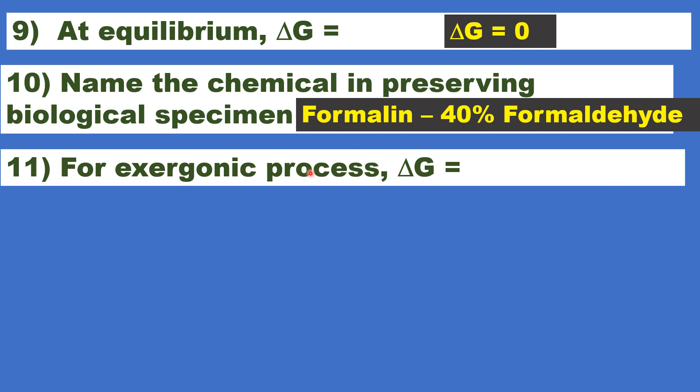For exergonic process or for exergonic reactions, delta G will be, delta G is equal to negative. For exergonic reactions, delta G is equal to negative. For endergonic reactions, delta G is equal to positive. For exergonic, it is negative. It is similar to exothermic process, delta H negative. For endothermic process, delta H equal to positive.